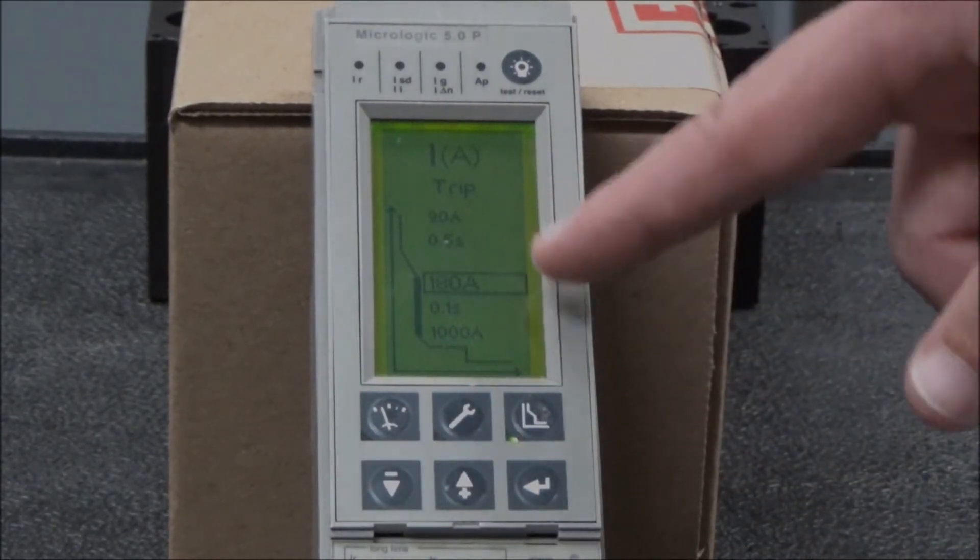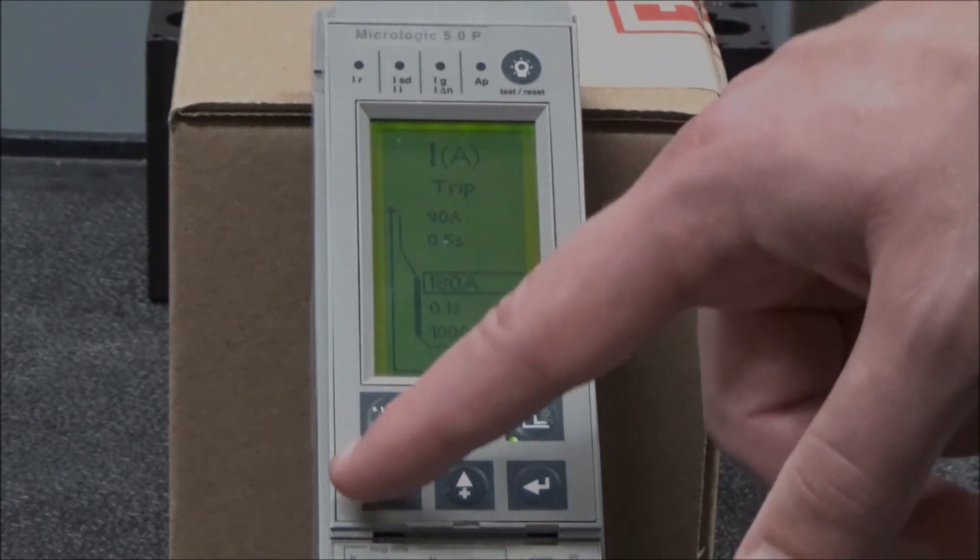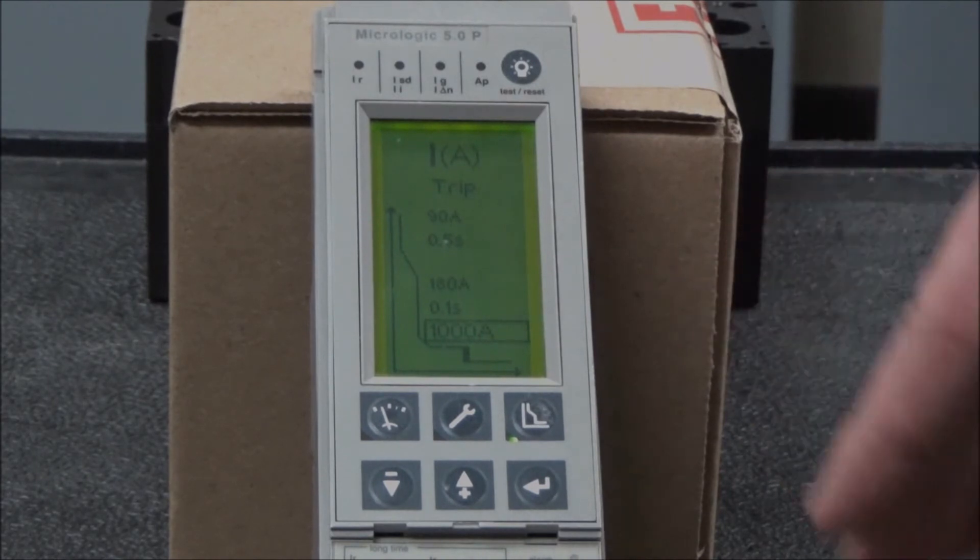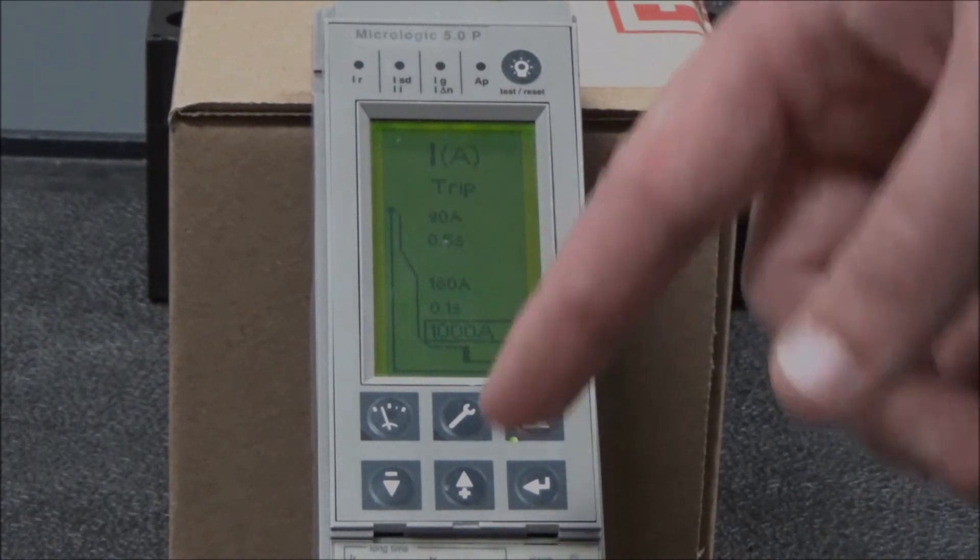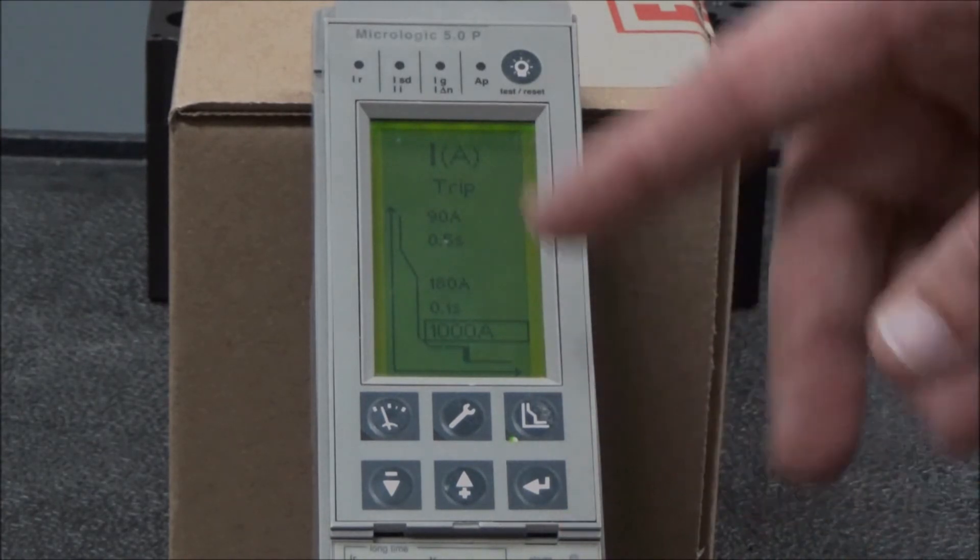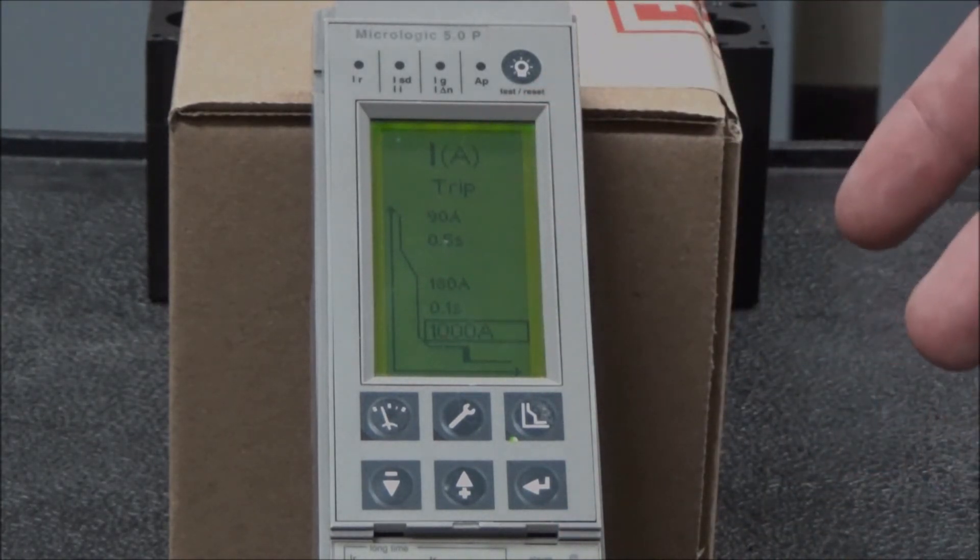The instantaneous and short time settings can be adjusted in 10 amp increments. And the ground fault trip unit settings can be adjusted in 1 amp increments like the long time setting.